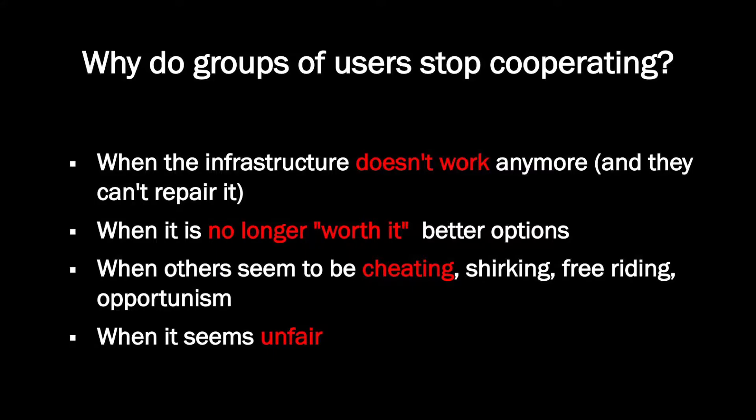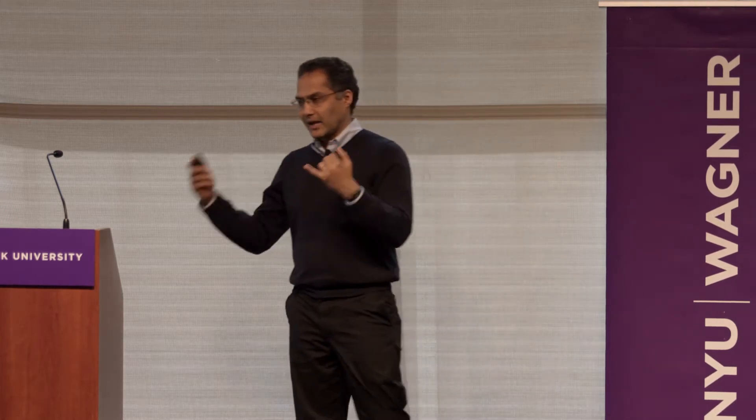You need rules for governing the behavior of the people who use it — the community of users. Maintenance critically depends on cooperation within this community of users; there's no third party that's going to come in and maintain this for you. And there are lots of collective action problems — problems that groups face when they need to act together, where the benefit comes in the future but the sacrifices they have to make are now. So if maintenance depends on continued cooperation, it's important to understand why users stop cooperating. They may stop when the infrastructure doesn't work, when it's no longer worth it, when others seem to be cheating, or when the system seems unfair.